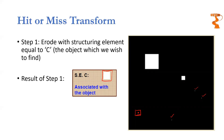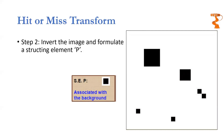We have eroded the original image with the structuring element that is exactly like the object we wanted to find. This is the output of the first step. The second step is a bit tricky. What we are going to do involves two things. The first thing is we are going to have an inverted image — we are going to invert the original image. This is the inverted image. And secondly, we are going to have a new structuring element, P.